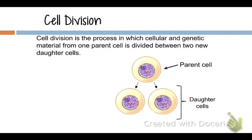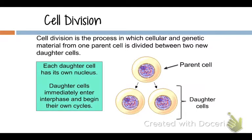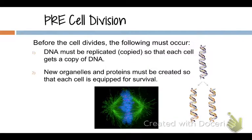We have a parent cell dividing to make two daughter cells. Each daughter cell is going to have its own nucleus with the same genetic material. They're just going to be smaller, and then they can expand in size as they go back into interphase of the cell cycle. Before a cell can divide, you have to copy your DNA and have organelles and proteins so that each new cell has what it needs to survive.